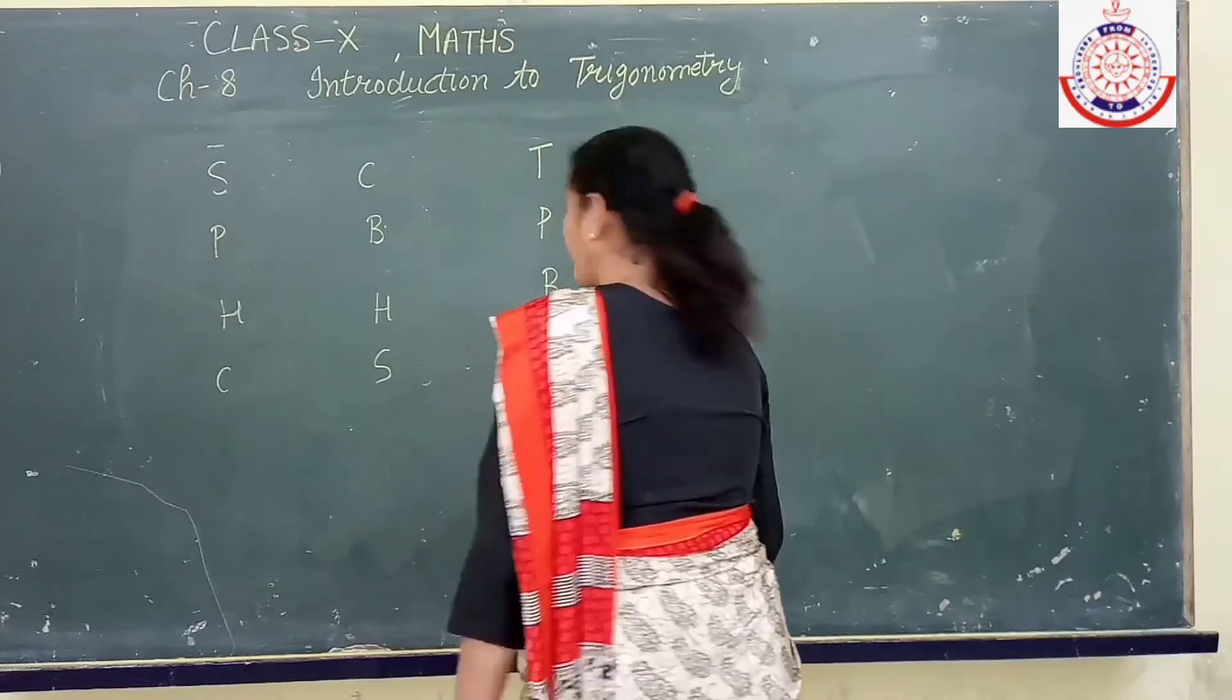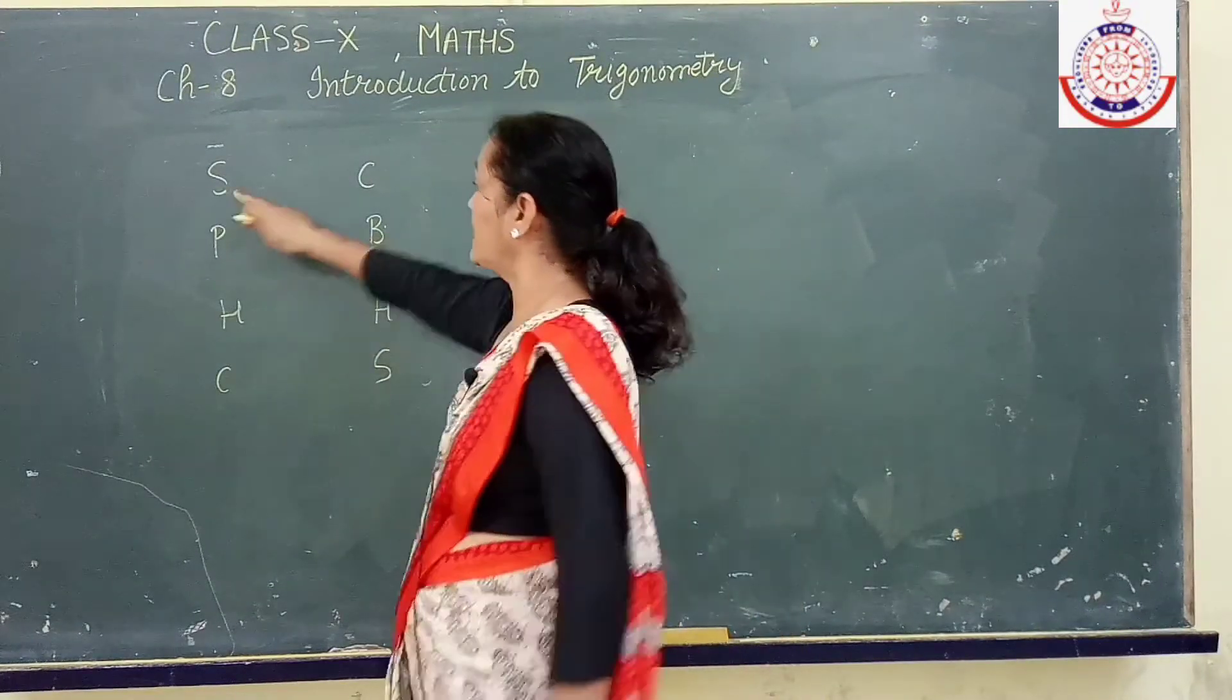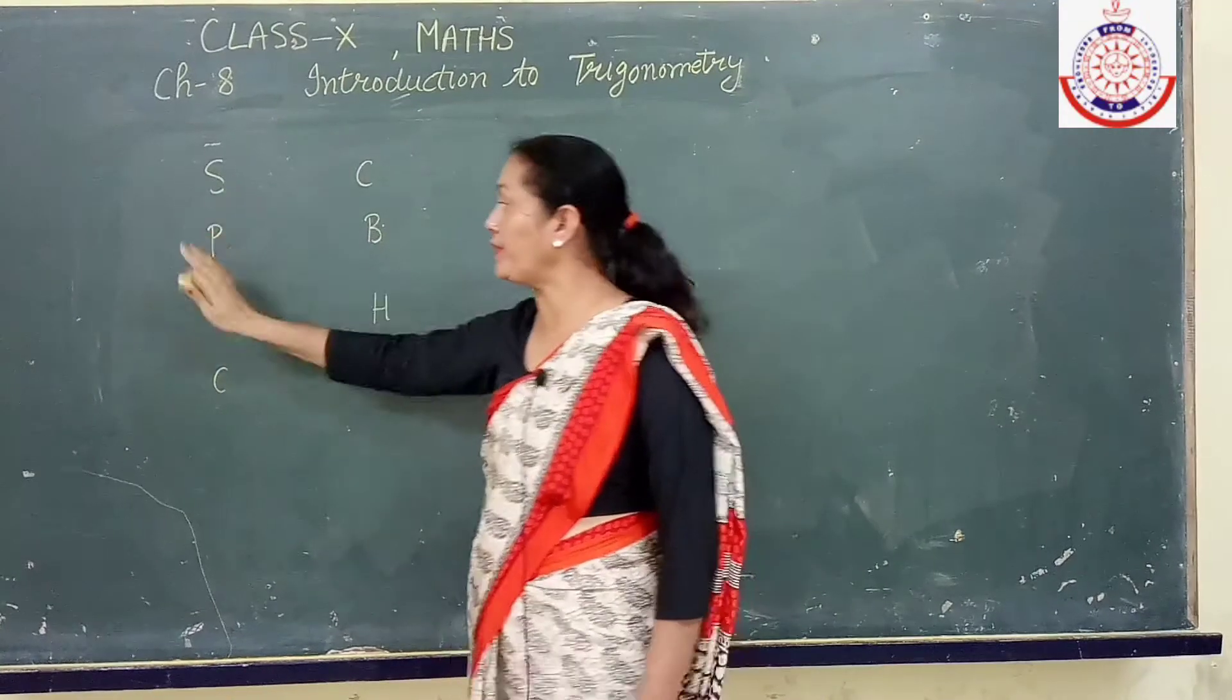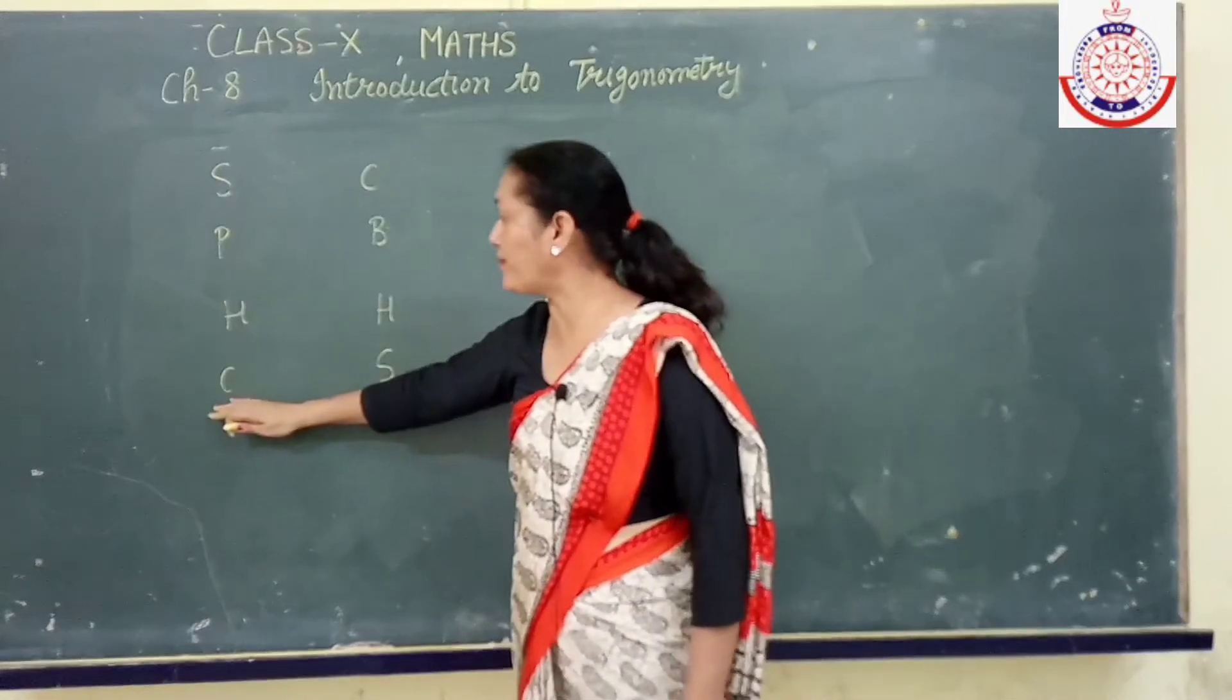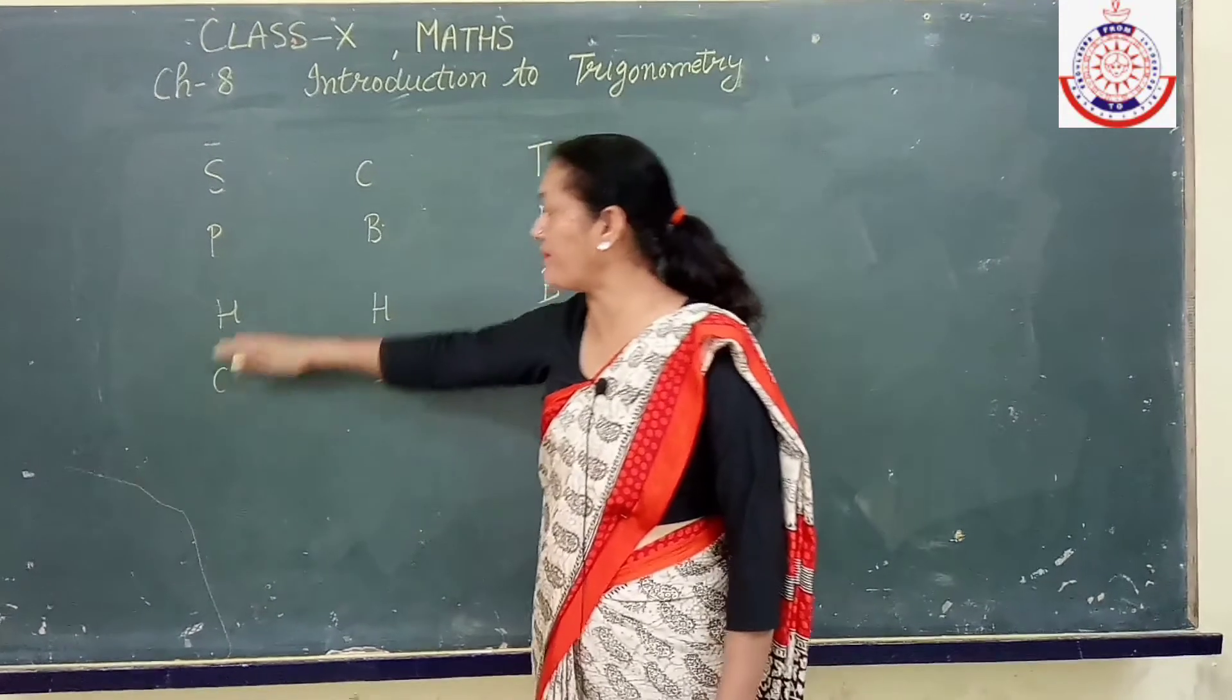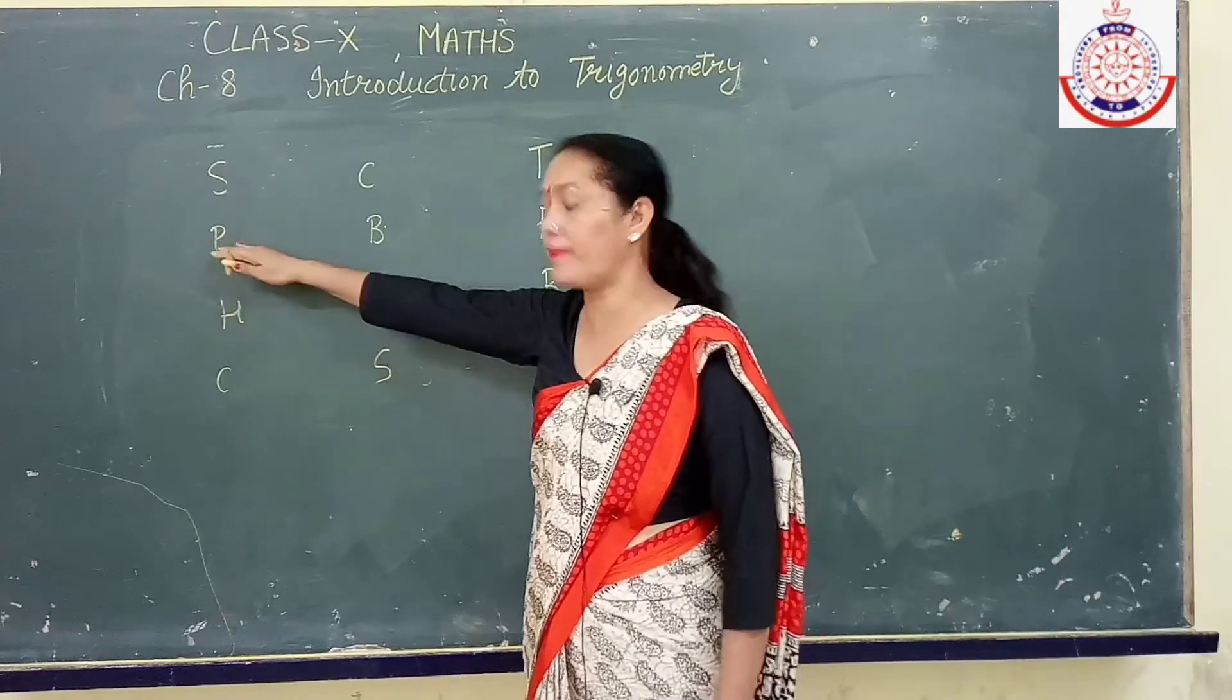Now how to use it? Sine is having value perpendicular over hypotenuse. If you come from this side, cosecant will be having value hypotenuse upon perpendicular.